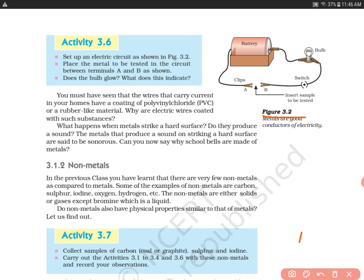As you can see in Figure 3.2, we have made an electric circuit. One terminal of the battery is connected to the bulb from here, the other wire is connected to the switch. The bulb is connected here. We have metal clips attached here - these clips are completing the circuit because they are metal clips, so they complete the circuit.